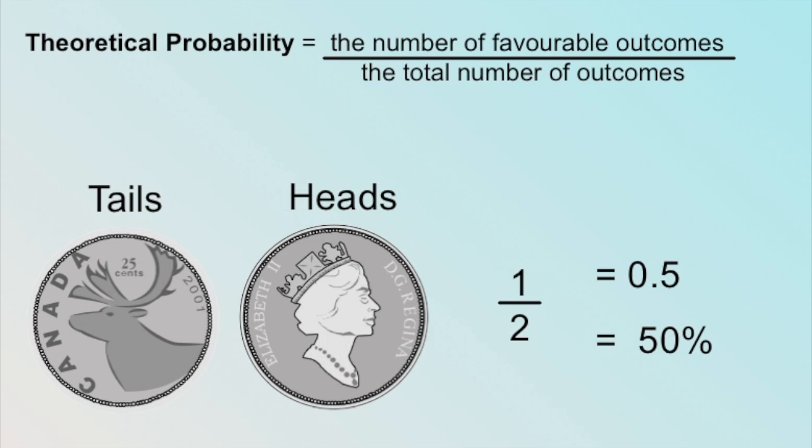We'll start with a quick review of basic theoretical probability. On a coin, there's one head and one tail. The total number of outcomes is two, heads and tails. That means there are one in two chances a head will come up, and one in two chances that it will land on a tail.